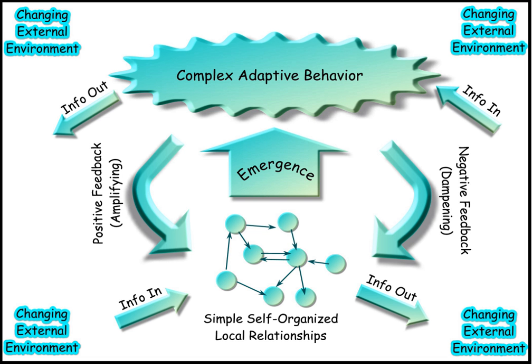Once a formal system is given, one can define the set of theorems which can be proved inside the formal system. This set consists of all WFFs for which there is a proof. Thus all axioms are considered theorems. Unlike the grammar for WFFs, there is no guarantee that there will be a decision procedure for deciding whether a given WFF is a theorem or not. The notion of theorem just defined should not be confused with theorems about the formal system, which, in order to avoid confusion, are usually called metatheorems.